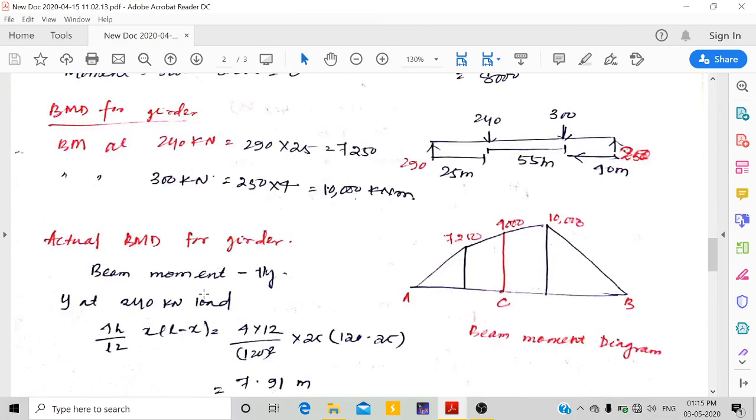The bending moment for the girder can be drawn like a simply supported beam. We have 290 at A, 240 kN acting here, 300 kN acting here, and 250 acting upward at B. The bending moment at the 240 kN load is 290 times 25, giving 7250. At the 300 kN load, this is 10000.